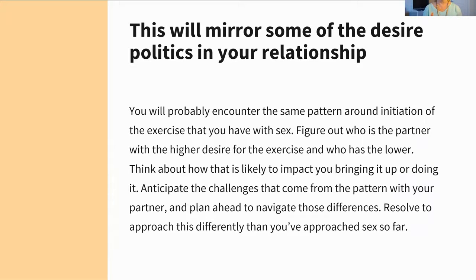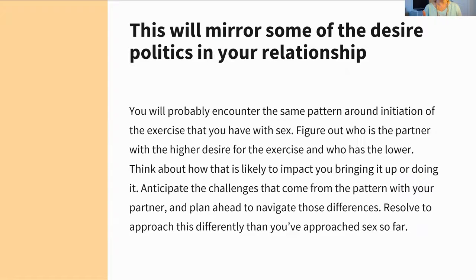This will mirror how sex goes in your relationship. If there is avoidance with sex, there's likely to be avoidance of this exercise. The person with higher desire for sex may very well be the higher desire partner for doing this exercise. Remember some of the strategies: try to show up as a team. For the lower desire partner, take an active role in making this happen and make sure you're talking about things in your way with it. For the higher desire partner, if the other person is resistant, don't give into resignation or discouragement — continue to advocate for it, continue to figure out what could be going on for them that makes this make sense. All the same concepts apply.